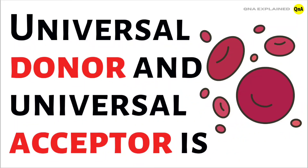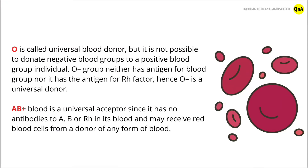O negative is called the universal blood donor. It is not possible to donate negative blood groups to a positive blood group individual. O negative group has neither the antigen for blood group nor the antigen for Rh factor. Hence O negative is a universal donor.